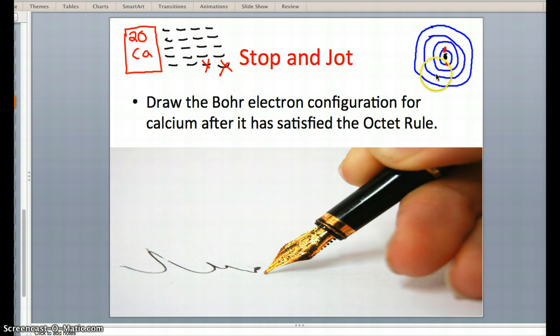Let's start out with the 2 inner electrons that go on the first shell. Add the next 8: 1, 2, 3, 4, 5, 6, 7, 8. Cross those off as well.